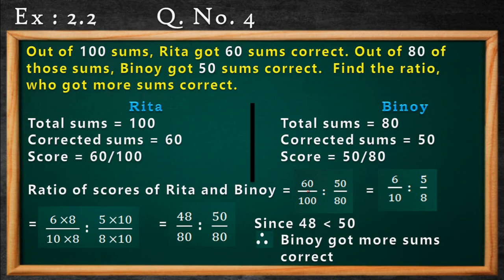Now next sum, question number 4. Out of 100 sums, Rita got 60 sums correct. Out of 80 of those sums, Benoy got 50 sums correct. Find the ratio — who got more sums correct? I have divided the frame. In the first frame I have kept Rita and in the second frame I have kept Benoy. In case of Rita, total sums 100, corrected sums 60, so the score of Rita is 60 out of 100.